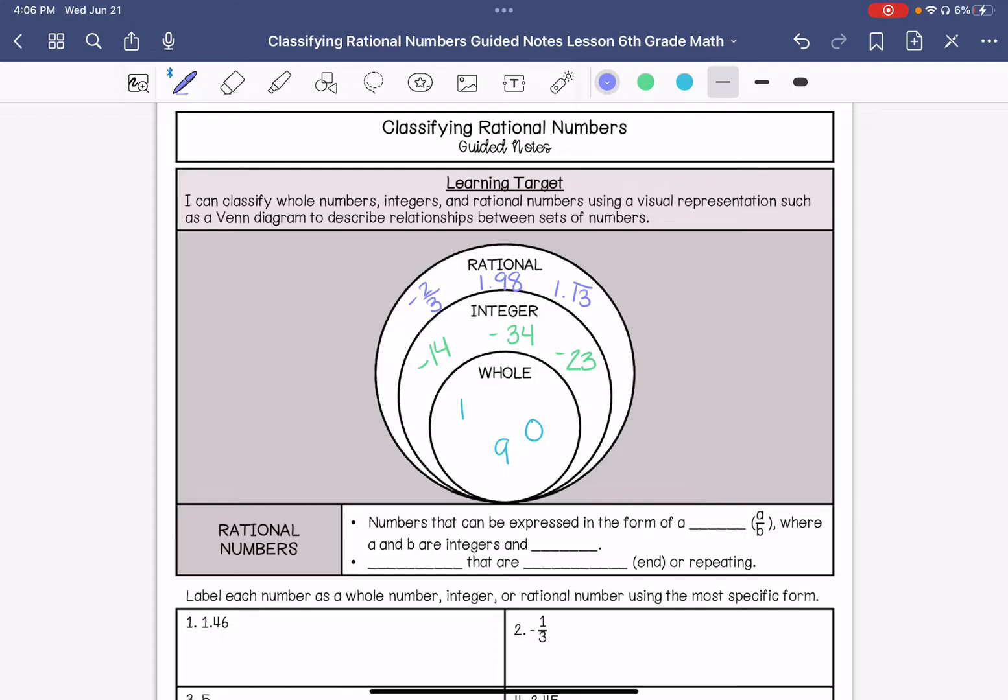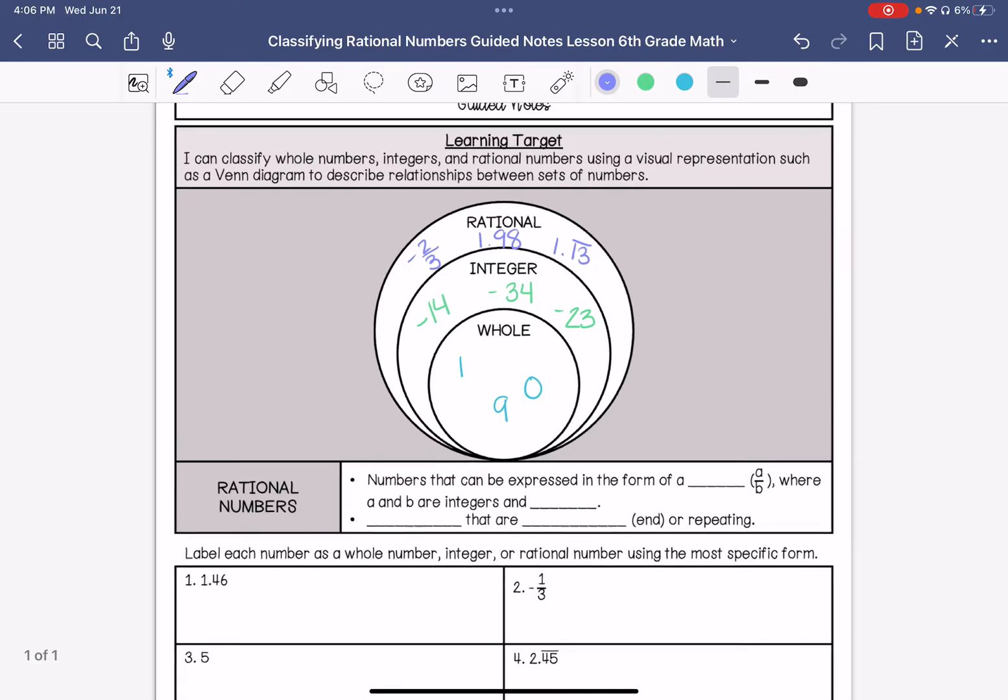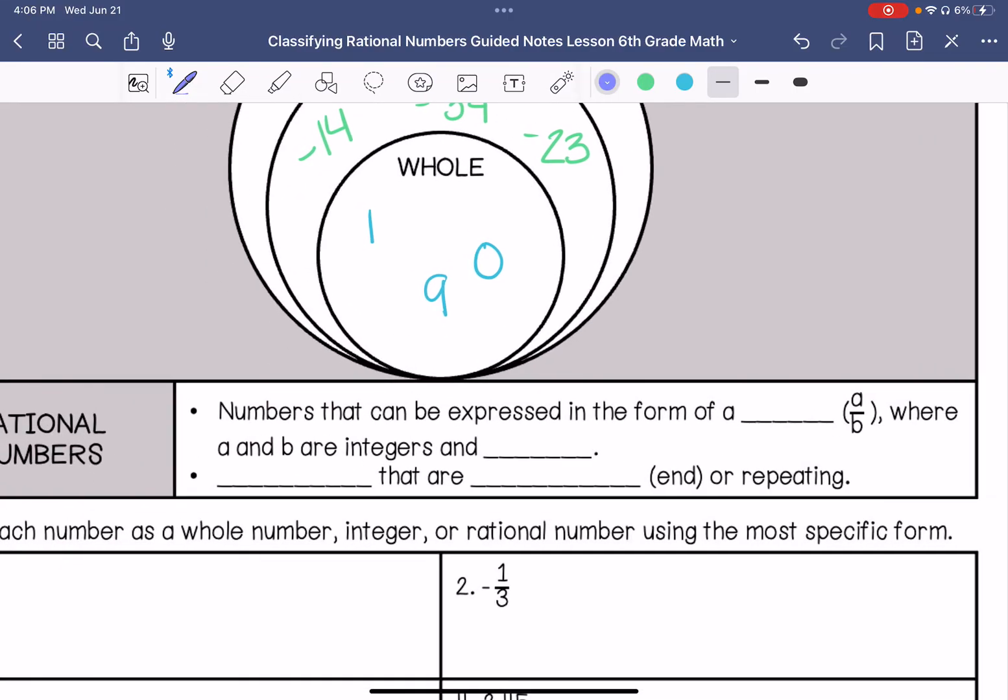So again, rational numbers are numbers that are expressed in the form of a fraction a/b, where a and b are integers and b does not equal 0.